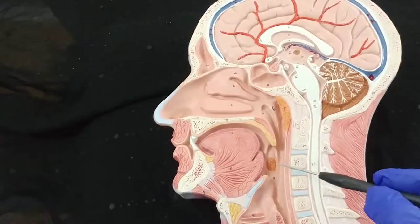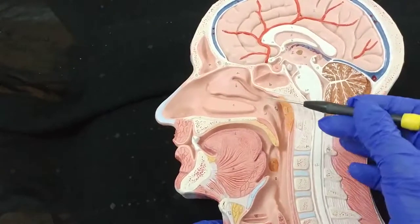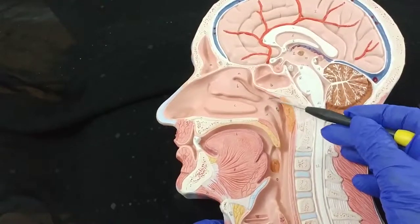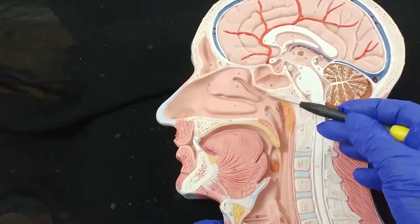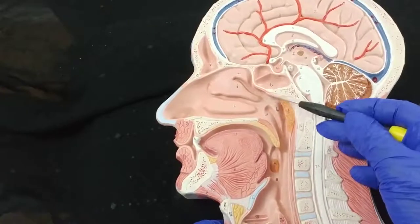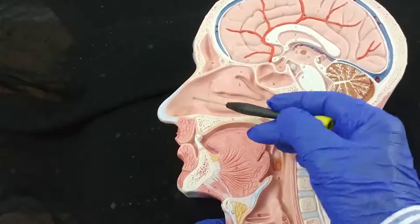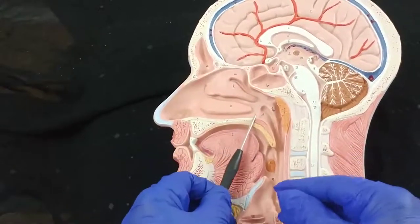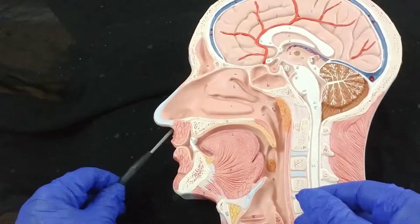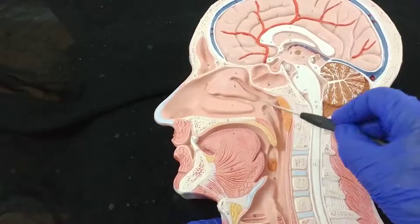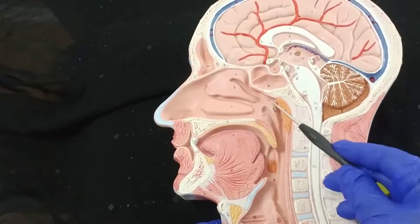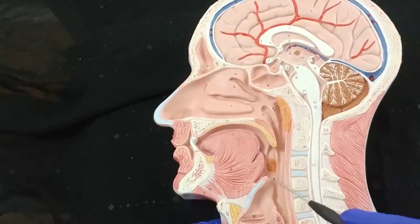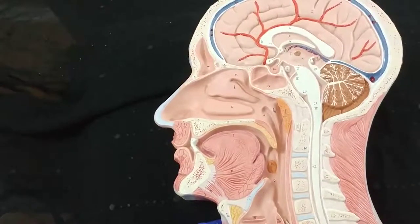Now we will identify the structures of the pharynx. The pharynx has three parts. This is the nasopharynx, which is behind the nose — the posterior nasal opening is called choana. This is the anterior nasal opening. The nasopharynx is behind the nose, the oropharynx is behind the oral cavity, and the laryngopharynx is behind the larynx.